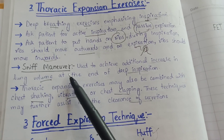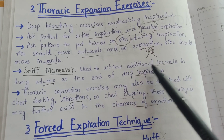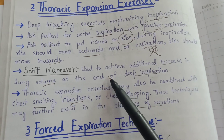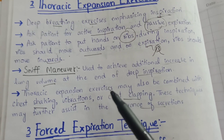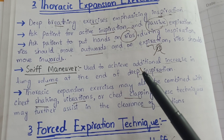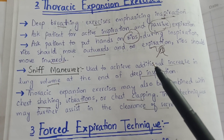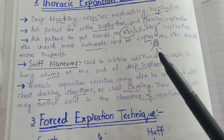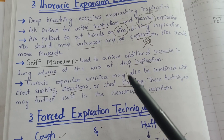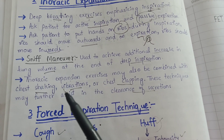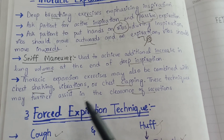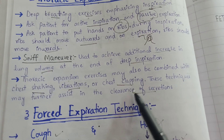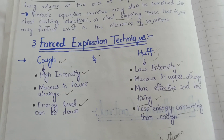The sniff maneuver is used to achieve an additional increase in lung volume at the end of deep inspiration. We ask the patient to sniff at the end of deep inspiration to increase the lung volume. Thoracic expansion exercises may also be combined with chest shaking, vibrations, or chest clapping, as these techniques may further assist in clearance of secretions.